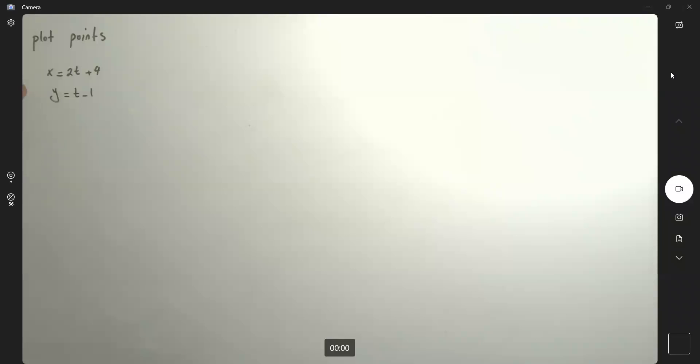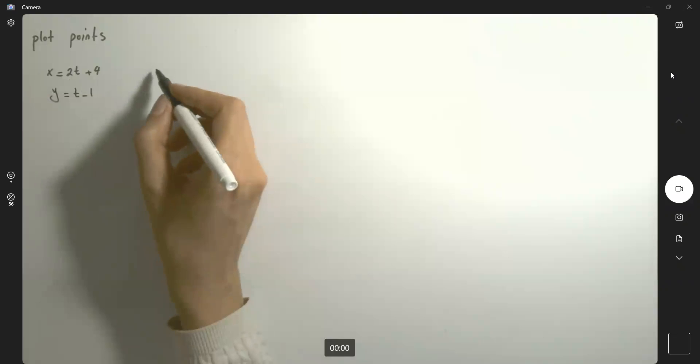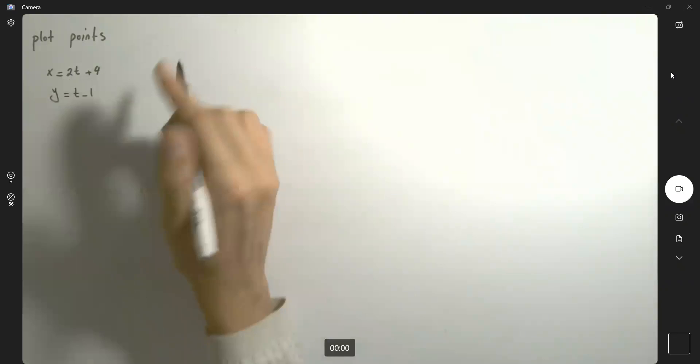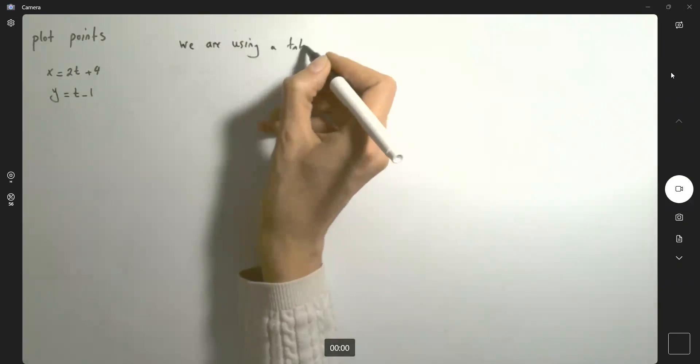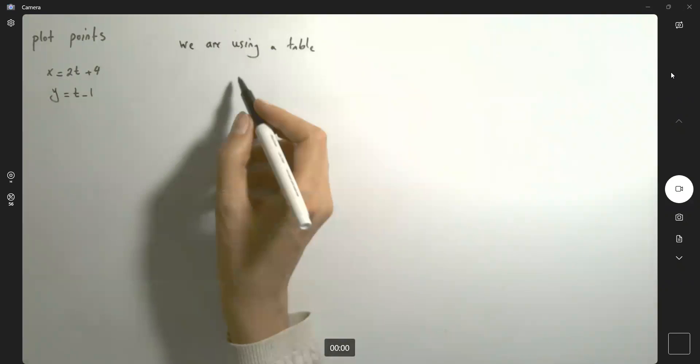This question says plot points where x is dependent on t and y is also dependent on t. What are we going to do? We're going to use a table.